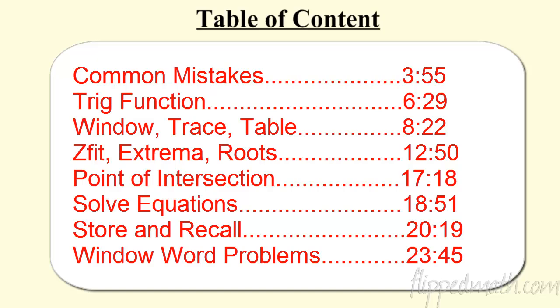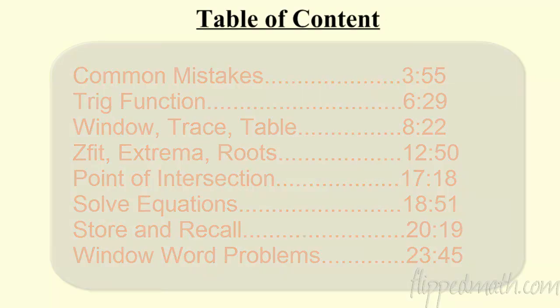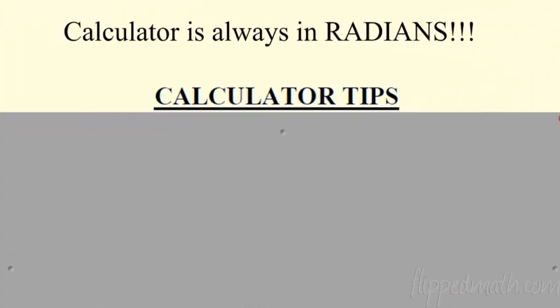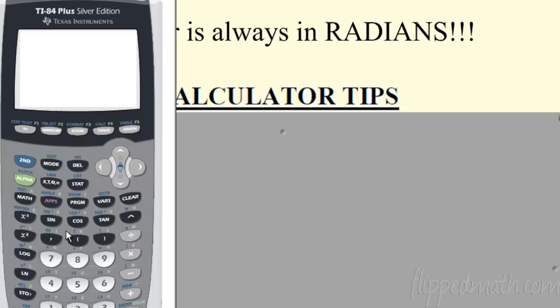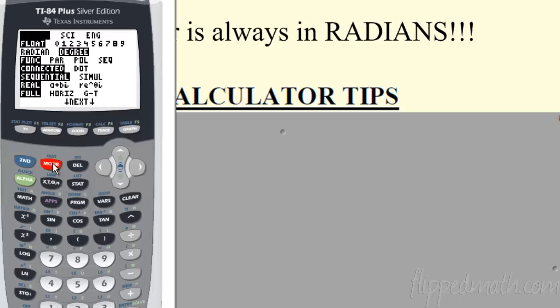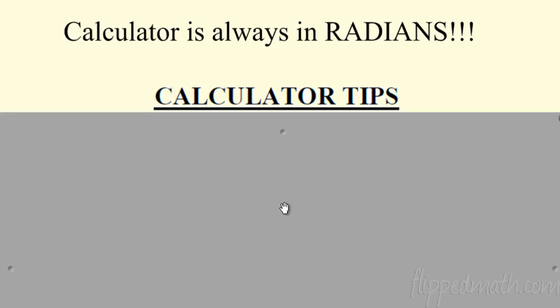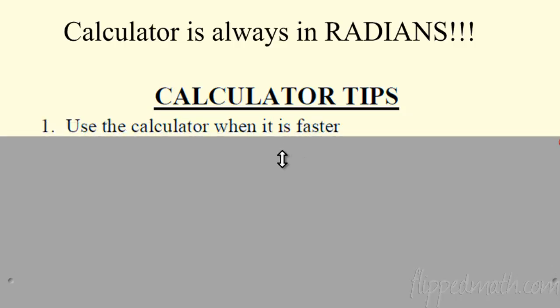First thing: the calculator is always going to be in radians. We don't deal in degrees for the AP exam. So right off the bat, take your calculator — go to mode. Mine is in degrees — don't do that. Always check that you are in radians. Everything is going to be in radians, so first thing: put yourself in radians, stay in radians, don't leave radians.